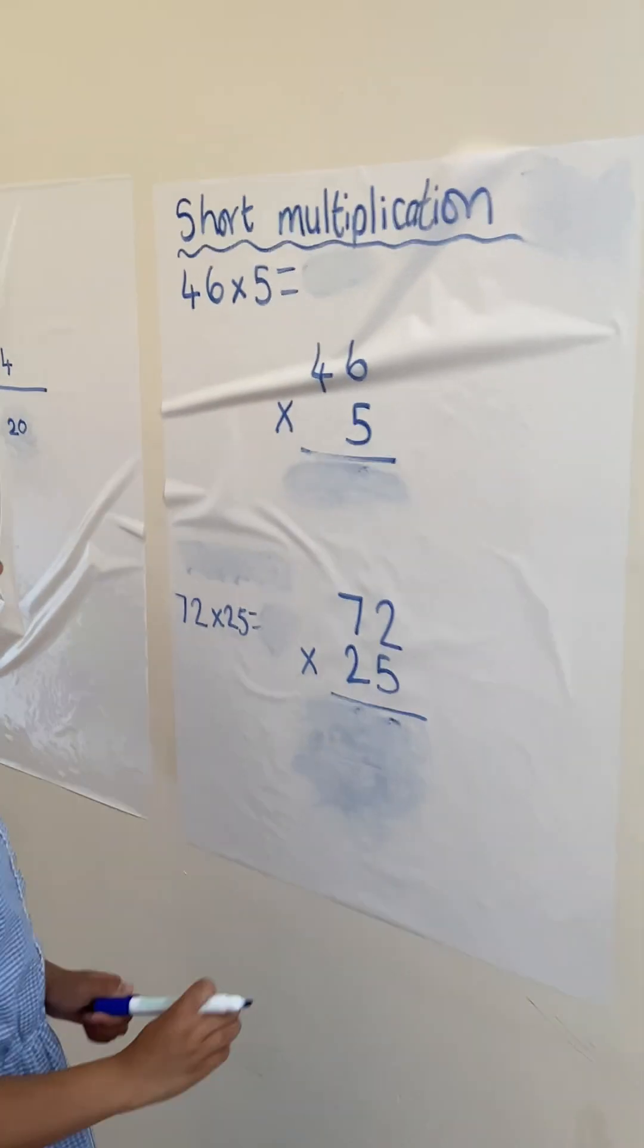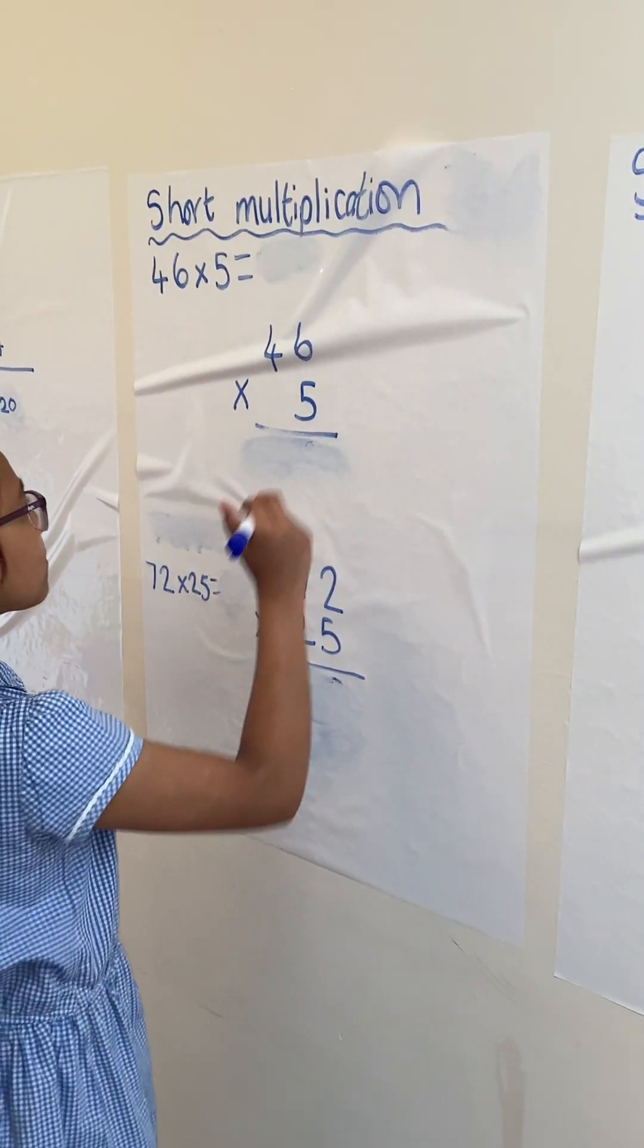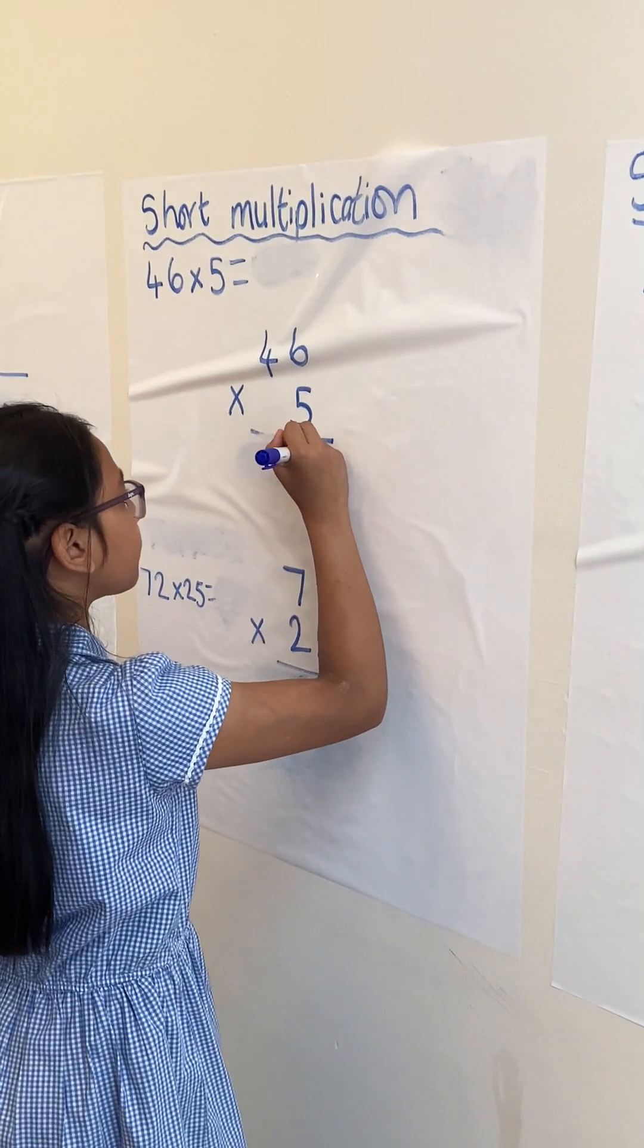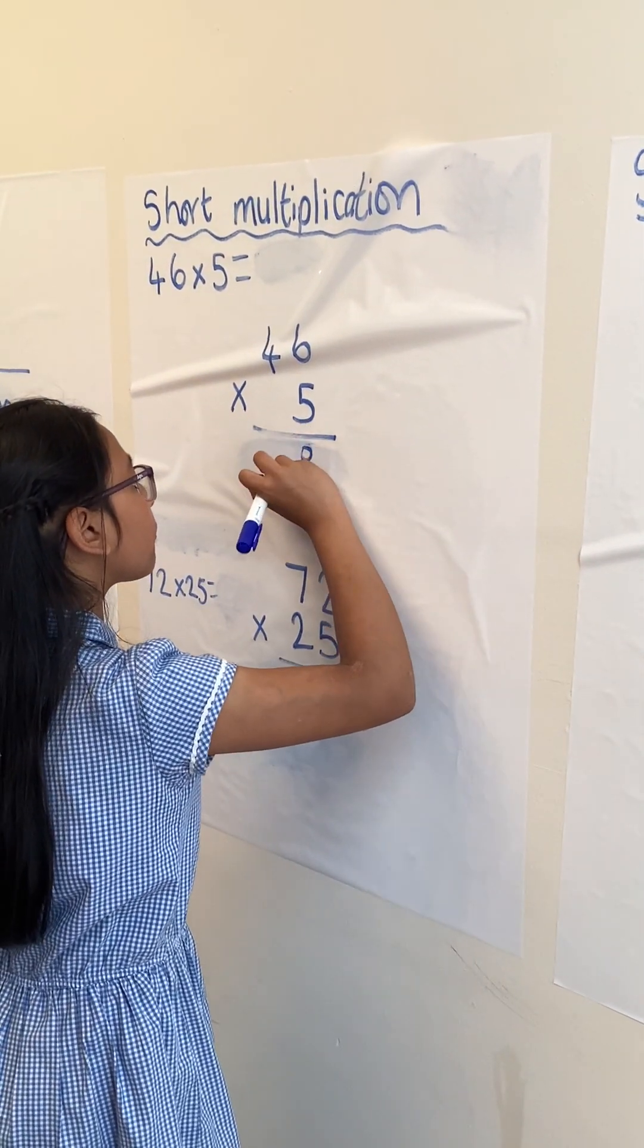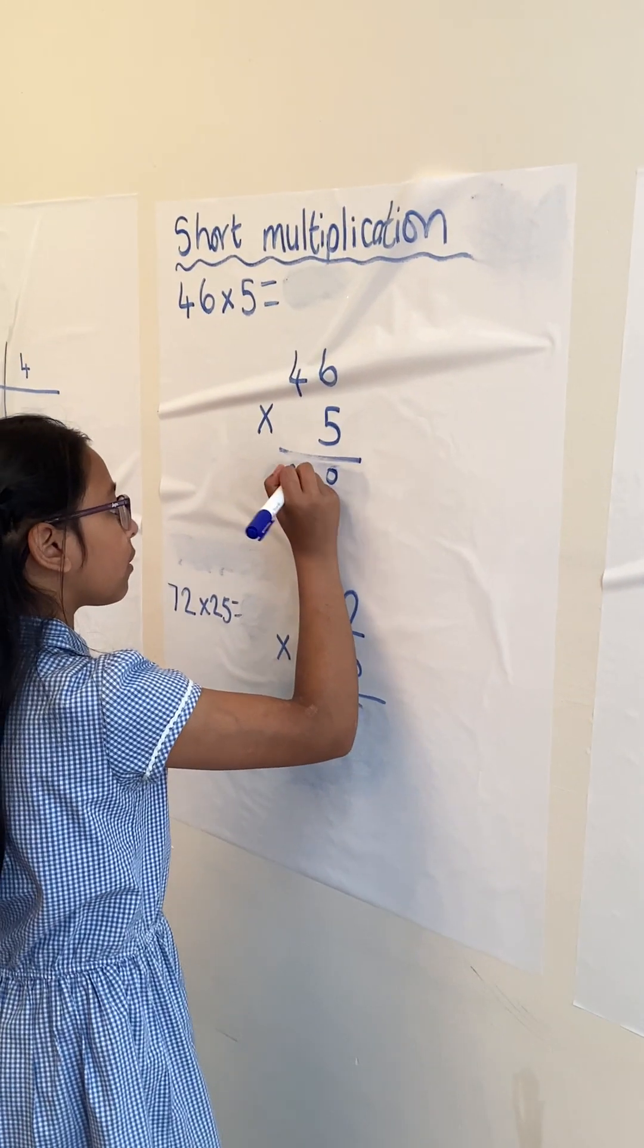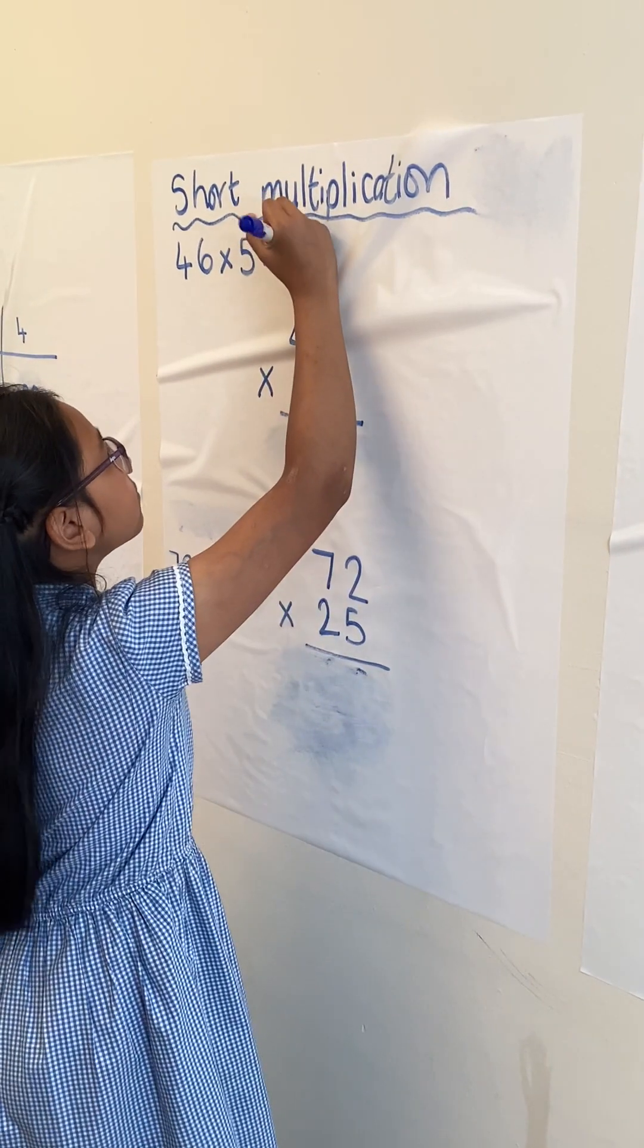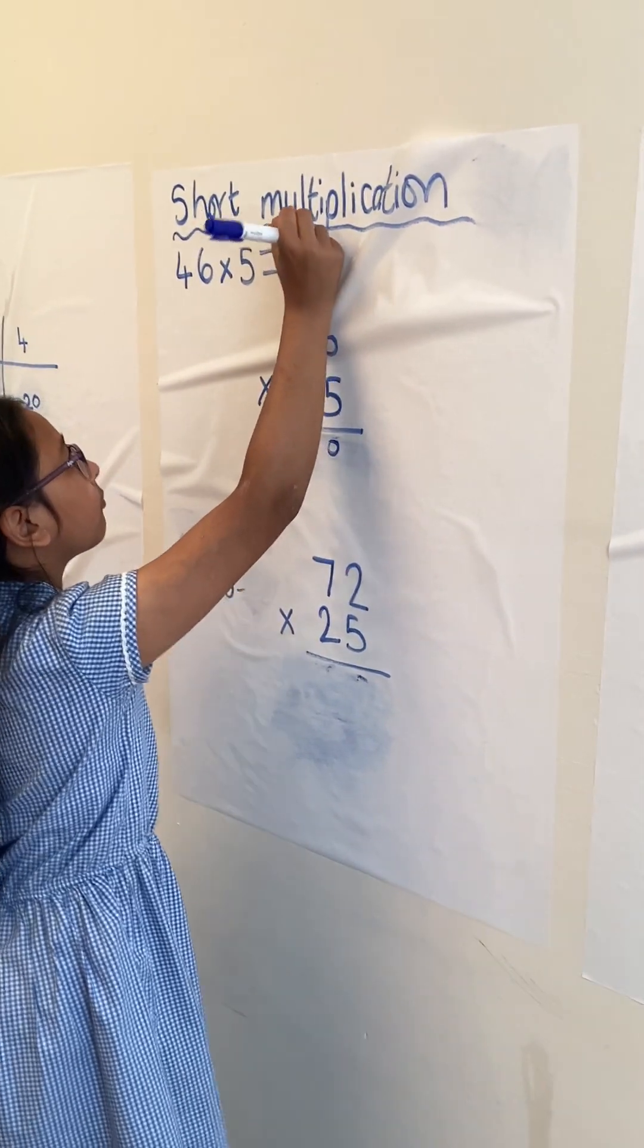We then move on to short multiplication, so we're doing a 2 digit number by a 1 digit number, 46 times 5. So, we do 5 times by 6, and then we do 5 times by 4, and then we add the 3. So 46 times 5 is 230.